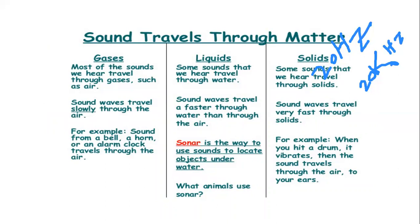Most of the sounds we hear travel through gases such as air. In air, the velocity of sound is less. In liquid, molecules are closer, so the sound's speed is more. Some sounds that we hear travel through solids. In solids, the speed is more because the molecules are closer. Closer will be the molecules, higher will be the speed.